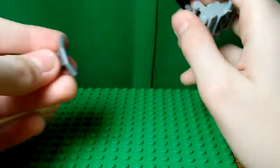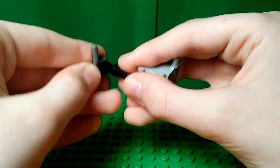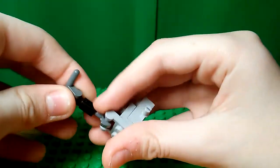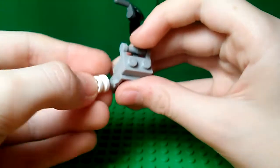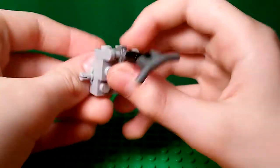And then you take one of these kind of handlebar pieces and just put that up here. And then you take two white wheel rims. You can choose what you want to do.